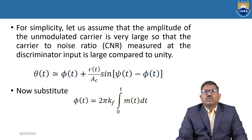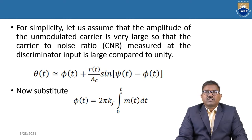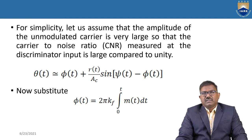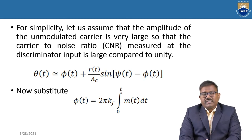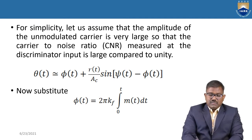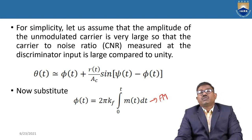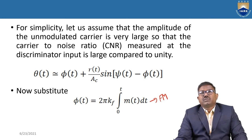For simplicity, we assume the unmodulated carrier amplitude is very large, so the carrier-to-noise ratio (CNR) measured at the discriminator input is large compared to unity. With this approximation, θ(t) ≈ φ(t) + (R(t)/AC)·sin(ψ(t) − φ(t)). Substituting φ(t) = 2π·Kf·∫m(t)dt for FM, since we are calculating noise in the FM system.